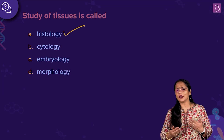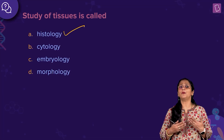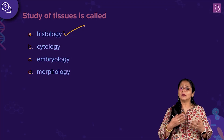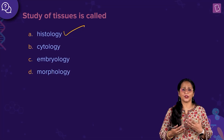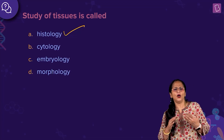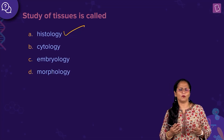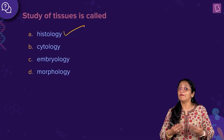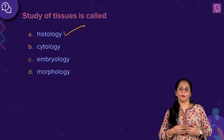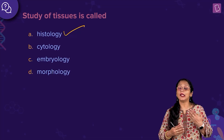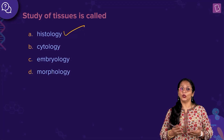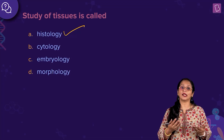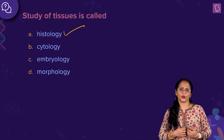Now, what are tissues? Tissues are nothing but a group of cells which have a similar structure. They may have similar structure or they may differ from one another, but invariably they are performing the same function. They probably have the same origin also. So a group of cells performing the same function is called a tissue.